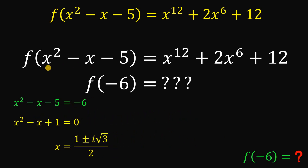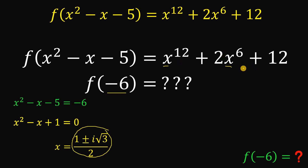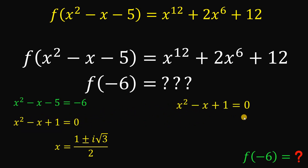If we replace x squared minus x minus 5 with negative 6, we replace all x on the right-hand side with (1 ± i√3) / 2. But this number would need to be raised to the power of 12 and to the power of 6, which takes considerable time to evaluate. So we will not use this value of x directly — instead, we'll use another approach to evaluate the right-hand side of the function.